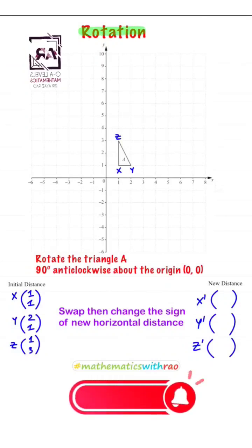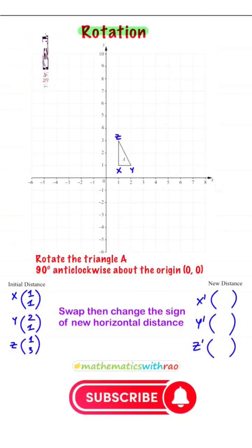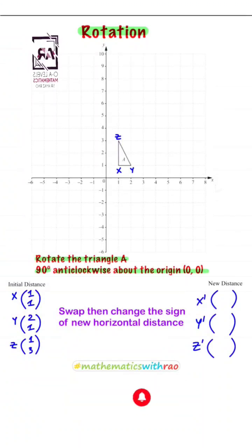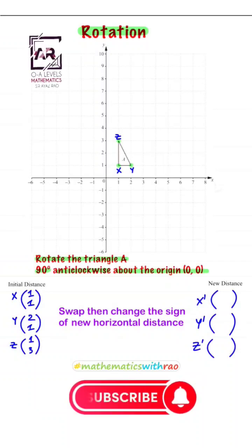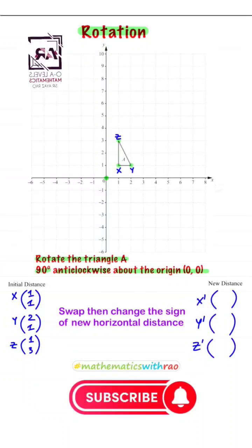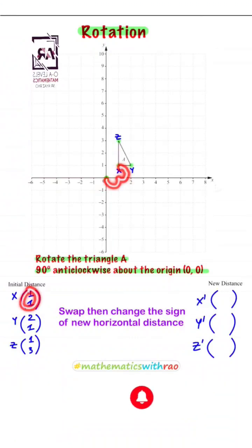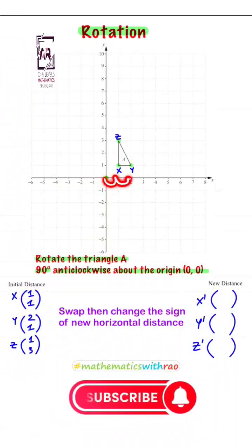Let me show you how rotation is done. Rotate triangle A 90 degrees anti-clockwise about the origin zero comma zero. First, find the distance of each vertex of the triangle from the center of rotation zero comma zero. For vertex X it is one comma one, for vertex Y it is two comma one, for vertex Z it is one comma three.